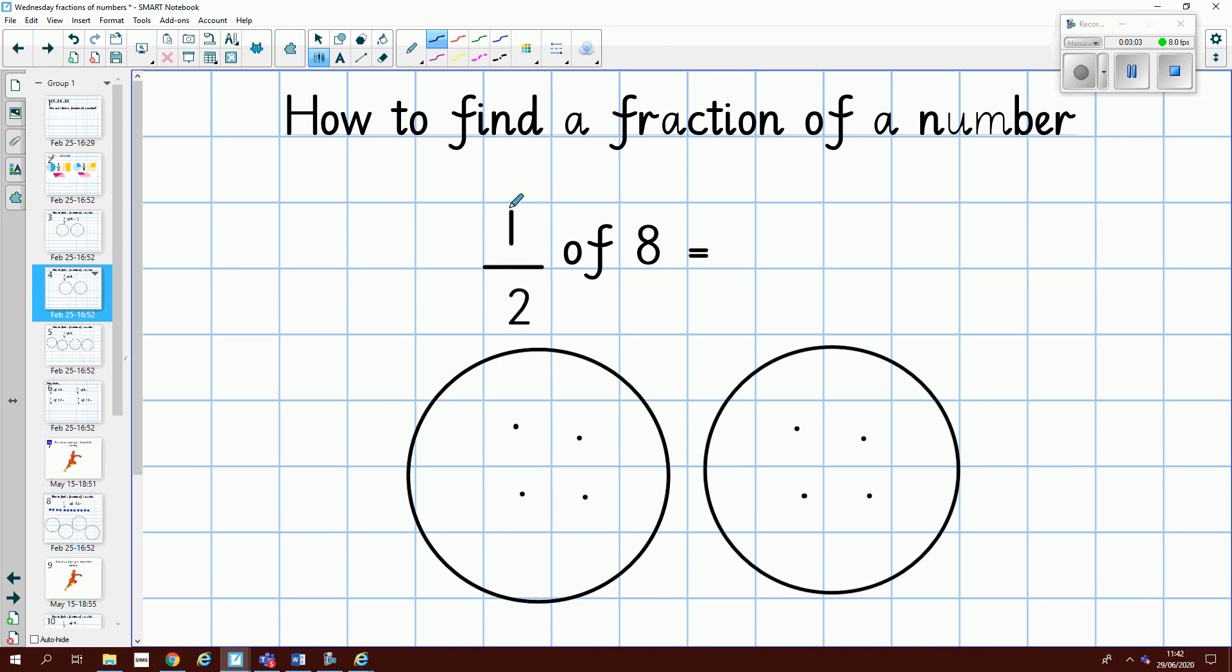Again, my numerator is one. So I'm only going to look at one of my groups, and I'm going to count it up. One, two, three, four. So half of eight is four.